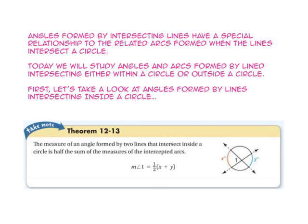First, let's take a look at the angles formed by lines intersecting inside a circle. Theorem 12-13 states that the measure of an angle formed by two lines that intersect inside a circle is half the sum of the measures of the intercepted arcs. Since these lines intersect inside the circle, the measure of angle 1 will be half of x degrees plus y degrees.